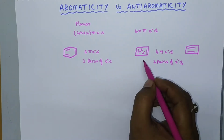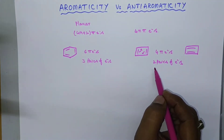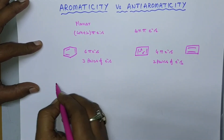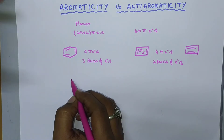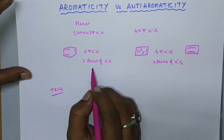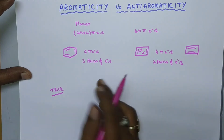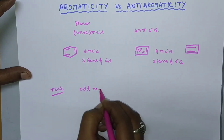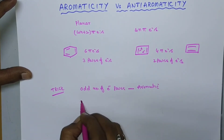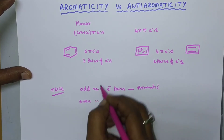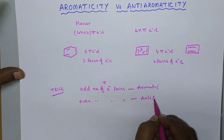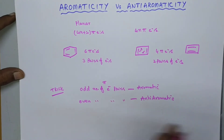In order to check whether a given molecule is aromatic or anti-aromatic, here is a small trick: we have to check whether there are an odd or even number of π electron pairs. If the molecule consists of an odd number of π electron pairs, it is aromatic. If it consists of an even number of π electron pairs, it is anti-aromatic.